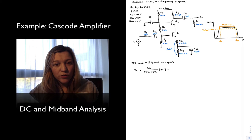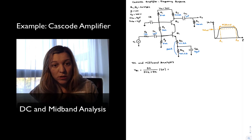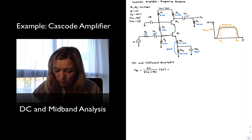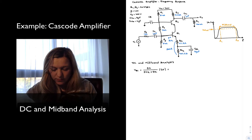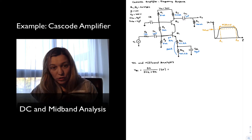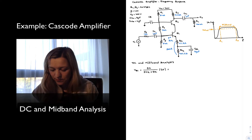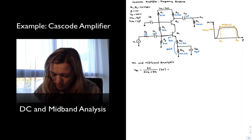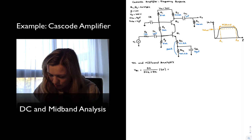R3 is one order of magnitude smaller than the resistance looking into the base of Q1, what I will call RAB. Therefore, I'm approximating the parallel combination of R3 with RAB1 as approximately equal to R3. If I do that calculation, I get 1.7V for VB1.